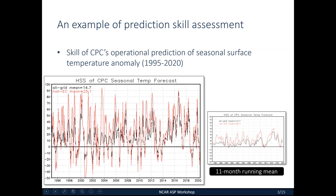The small inset panel is the 11-month running mean of that time series. The property of this skill measure is: if the forecast is perfect, the score is 100; if the forecast is the same as climatology, the skill score is zero; and if the forecast is wrong everywhere, the skill is minus 50. The average of the black line is 14.7 — the best this number can get is 100. So the average seasonal forecast skill over 25 years is much below the maximum, which is a fairly well-established fact for both sub-seasonal and seasonal time scales compared to weather prediction.